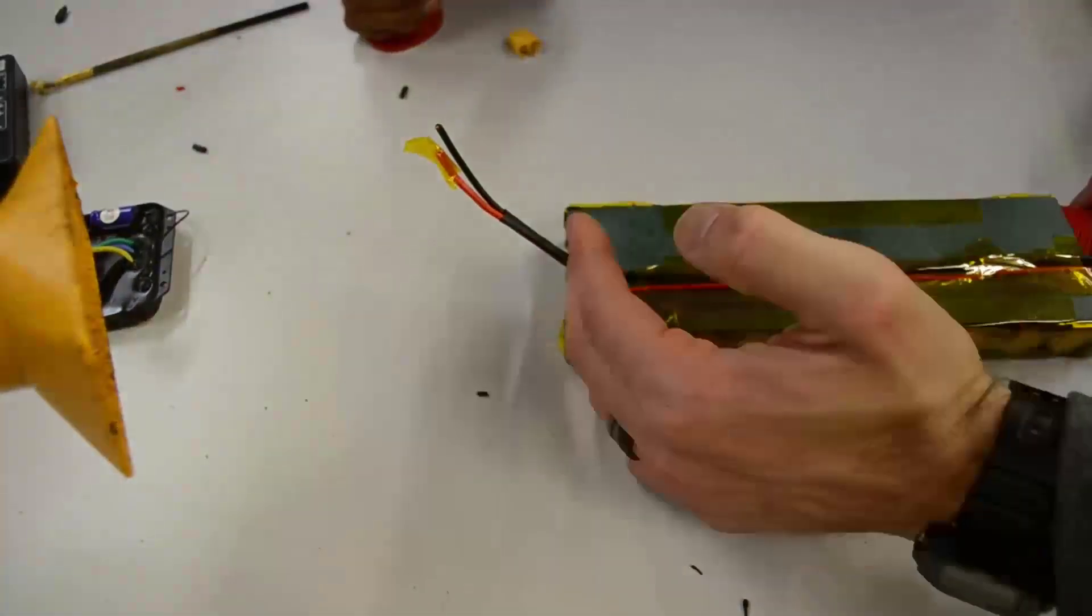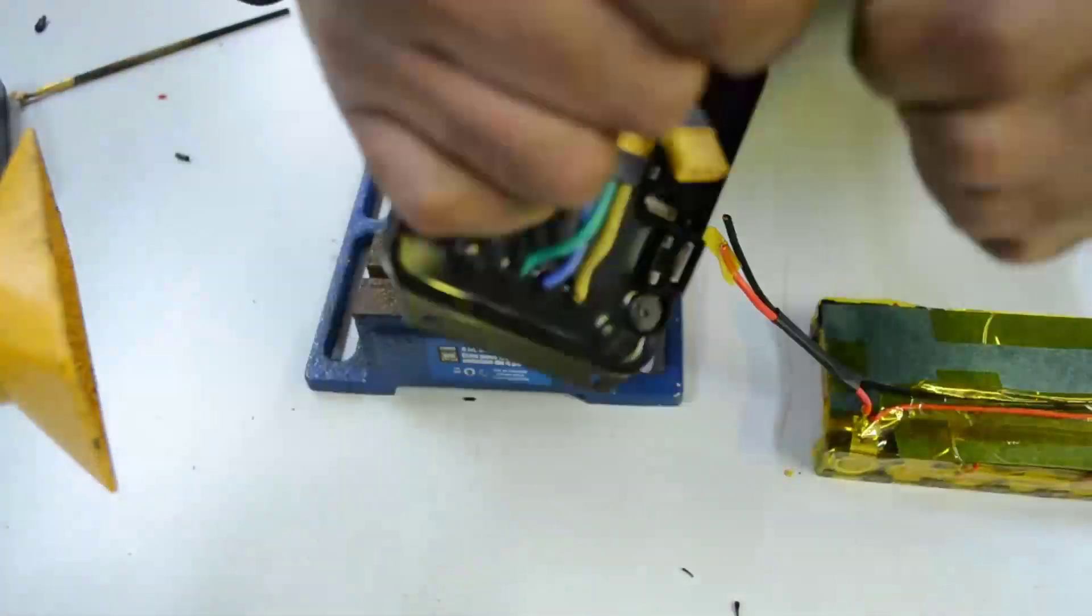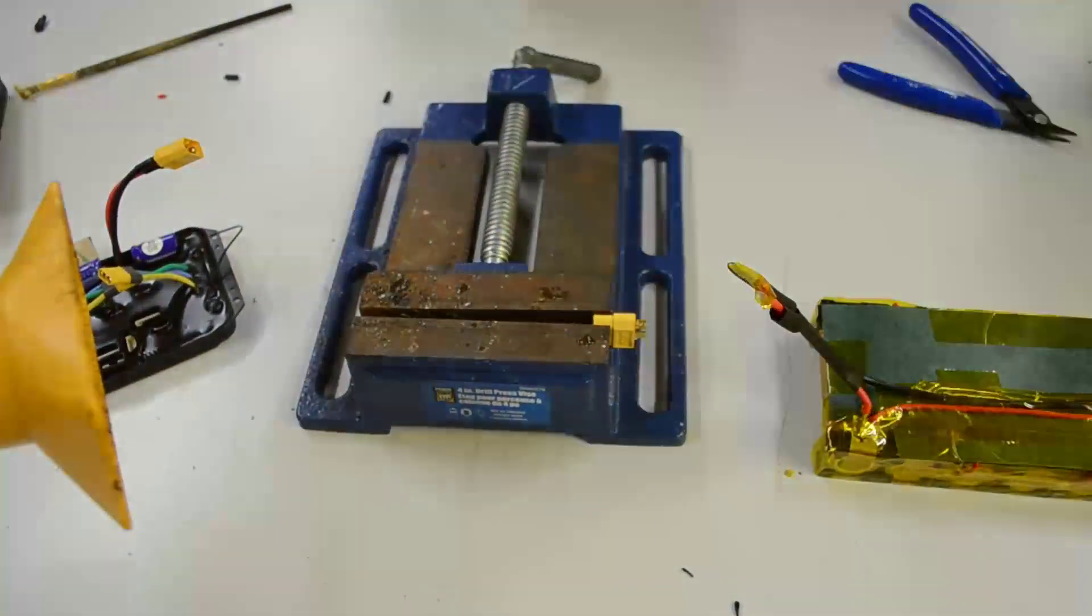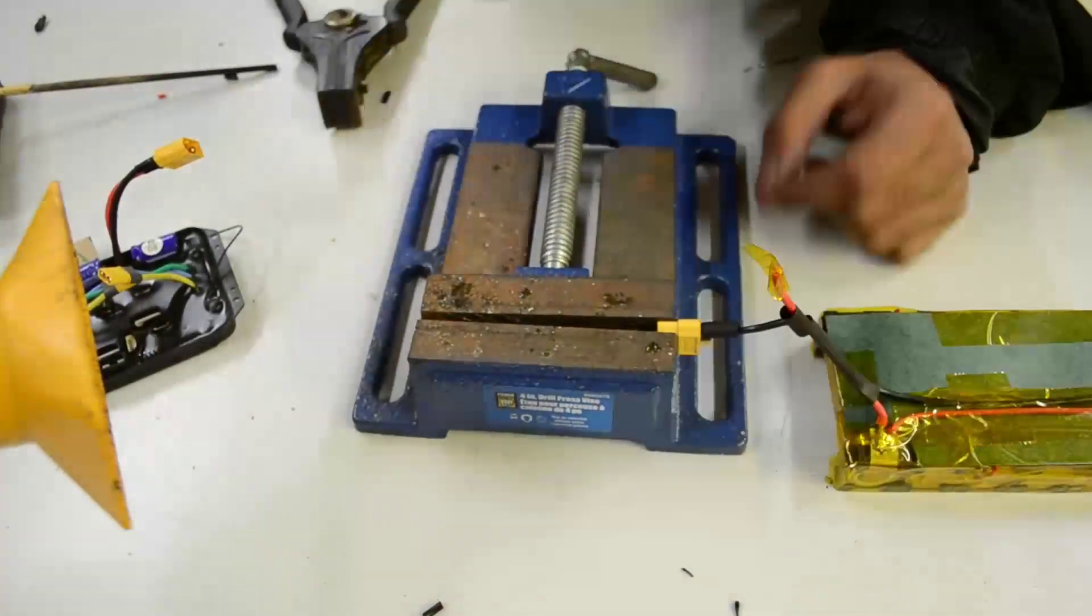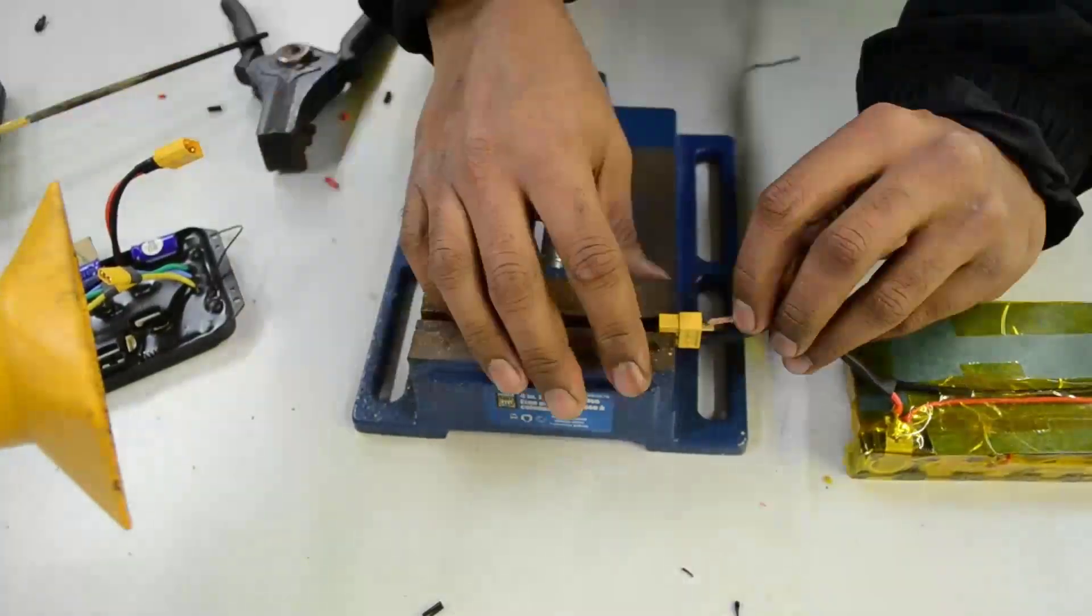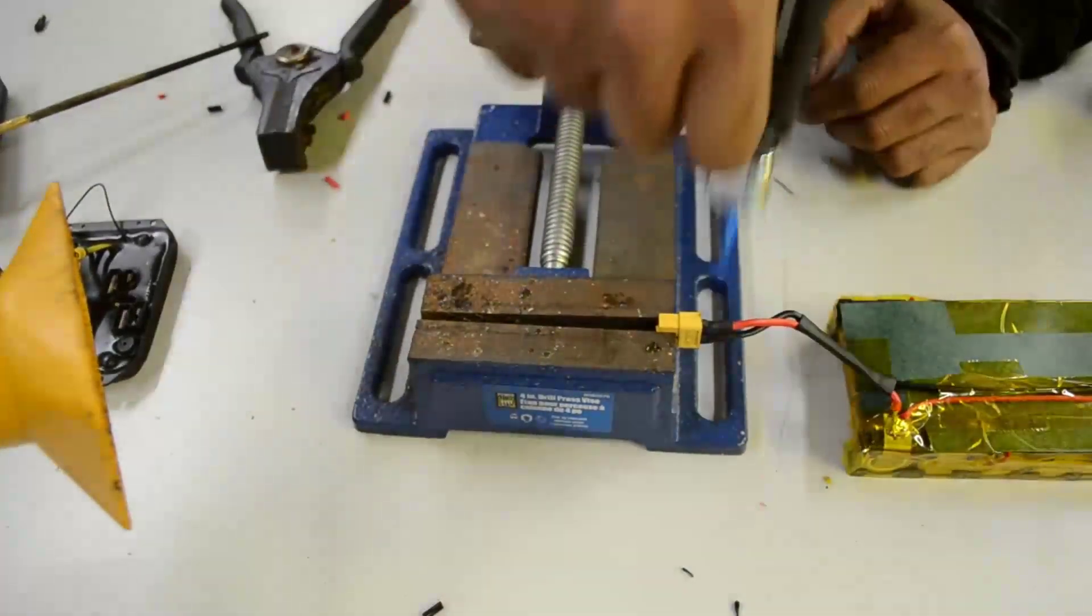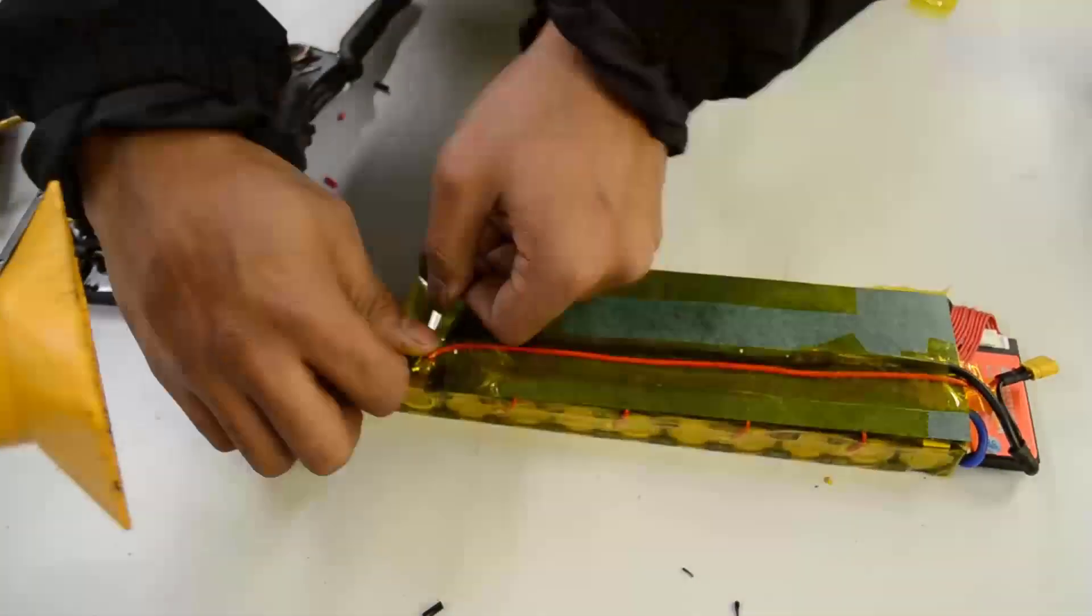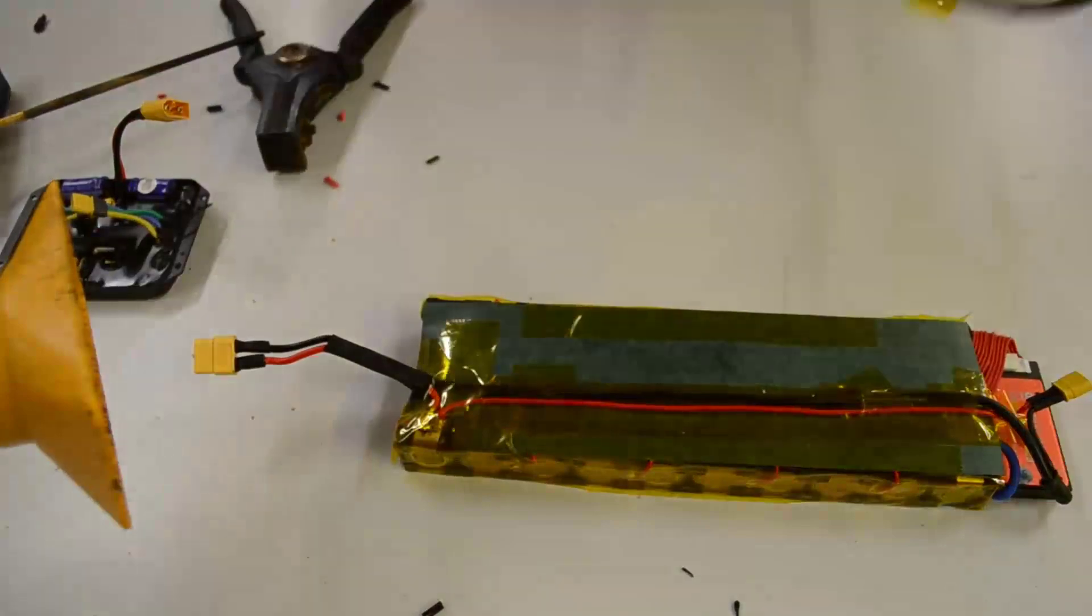So again, we're going to get out our vise. We're going to clamp our XT60 into the vise. And we're going to solder it in place. Make sure that we ran our heat shrink before soldering the connectors on. And then using our torch to heat up the heat shrink. This is an appropriate length. So now we're going to tape everything up. And then we're going to run some PVC shrink over top of the entire battery pack.